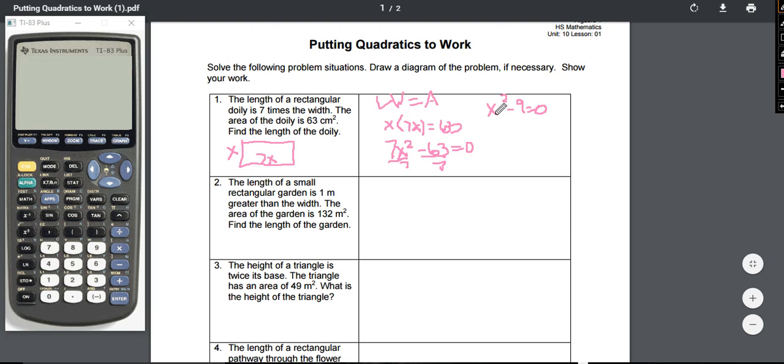Now we would have x squared minus nine equals zero. Hopefully you notice that x squared minus nine, you have a difference of perfect squares. So that's going to factor to be x plus three times x minus three equals zero.